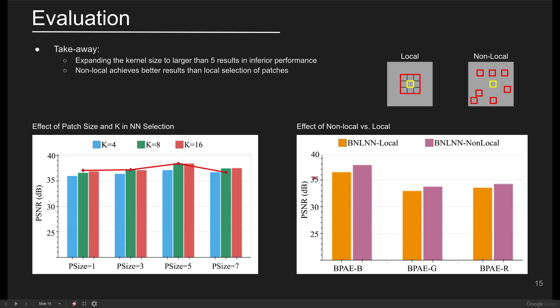In the next experiment, we study the role of non-local patch retrieval versus the local patch selection strategy with k and patch size fixed to 8 and 5 respectively. For the local scenario, non-overlapping adjacent patches are replaced with the non-local ones.